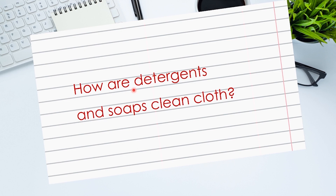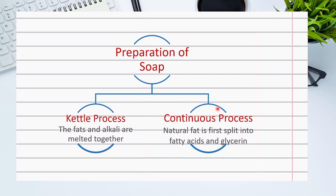How are detergents and soaps killing clothes? Let's first look at the preparation of soap. There are two methods used to prepare soap in the industry: the kettle process and the continuous process.